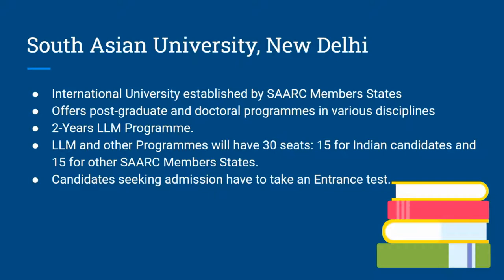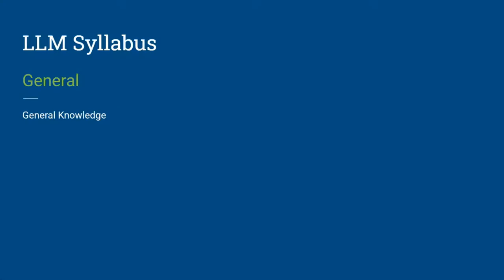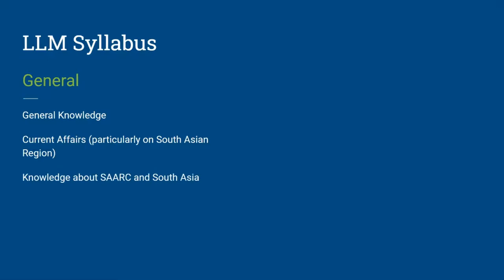The SAU LLM entrance test syllabus has two parts. The first part deals with a general segment covering GK, where you need to prepare basic history including world history events, basic geography, and scientific developments. You need to know current affairs, emphasizing recent happenings and important events in South Asia, as well as basic knowledge of SAARC and other international organizations. Out of 100 questions, 20 questions will be asked from this part.